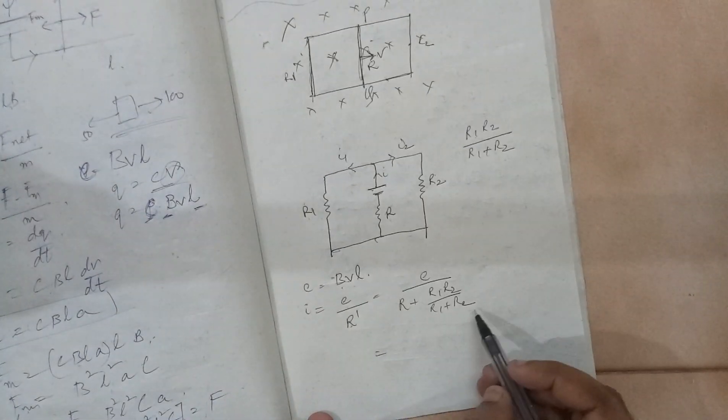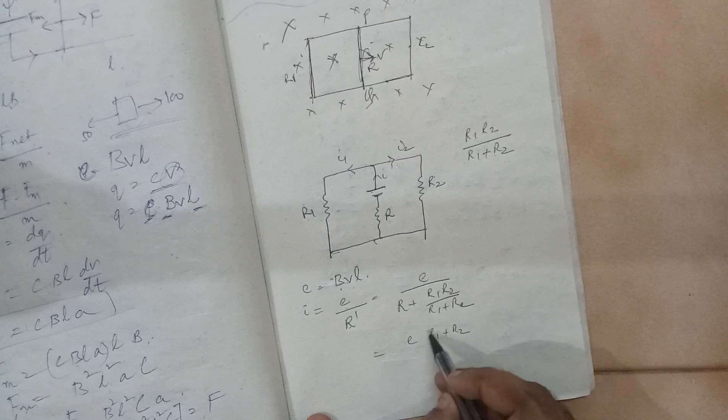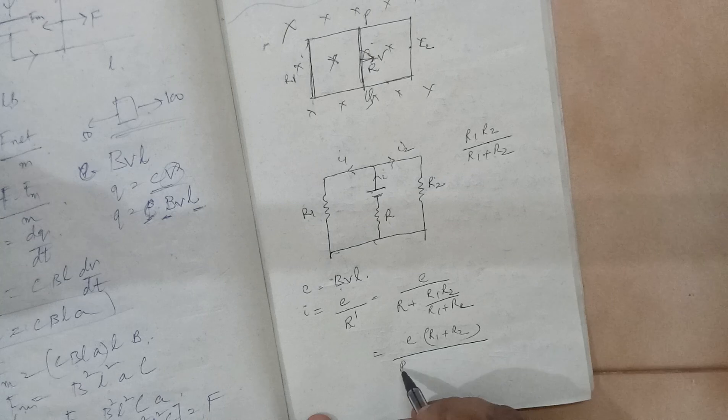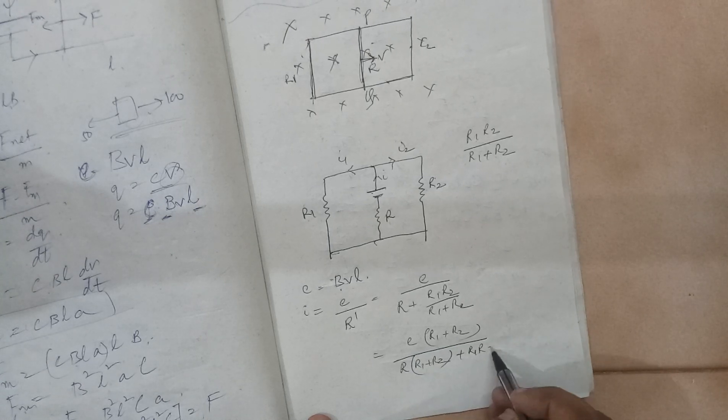So if you simplify this, you get E times R1 plus R2 divided by R into R1 plus R2 plus R1, R2.